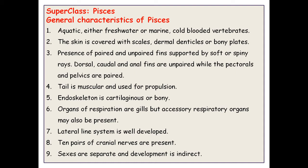Paired and unpaired fins are supported by soft or spiny rays. Dorsal, caudal, and anal fins are unpaired, while pectoral and pelvic fins are paired. The tail is muscular and used for swimming and propulsion.